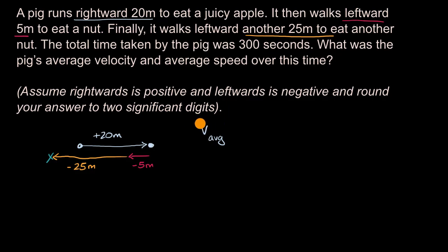You oftentimes for one-dimensional vectors might not see an arrow there or might not see it bolded. But our average velocity is going to be equal to our displacement or change in x divided by how much time has actually elapsed.